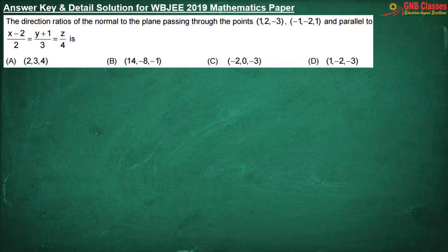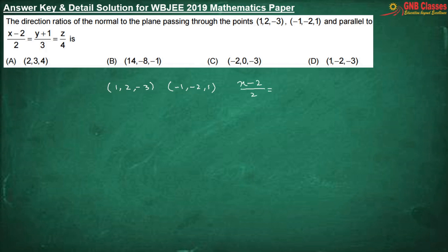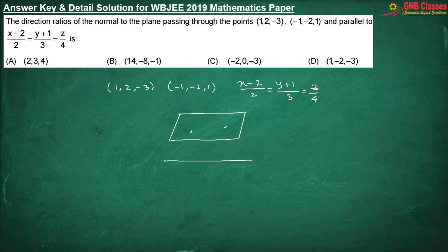The direction ratio of the normal to the plane passing through two given points — these are the two points through which the plane is passing — and the required plane is parallel to a given line.